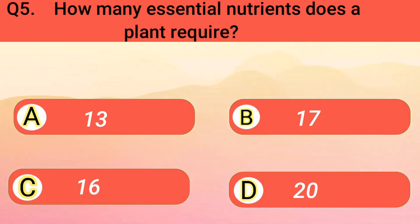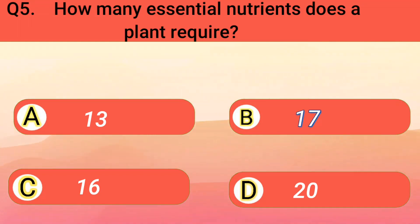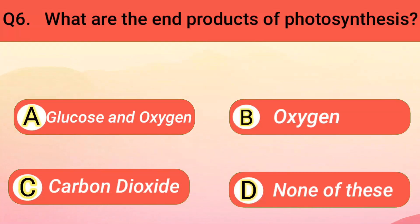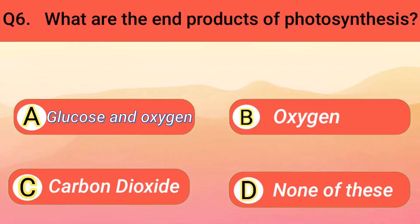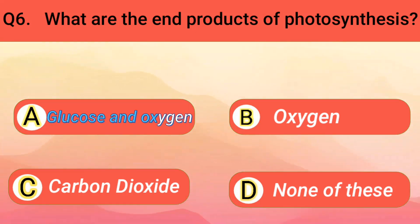How many essential nutrients does a plant require? 17. What are the end products of photosynthesis? Glucose and oxygen.